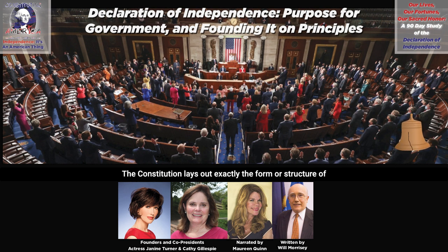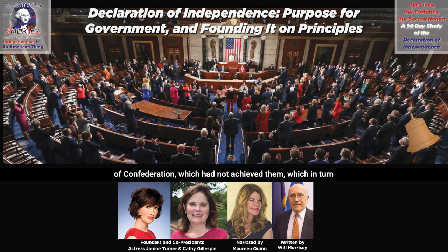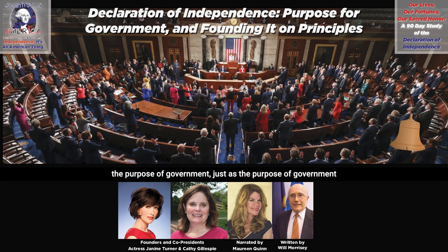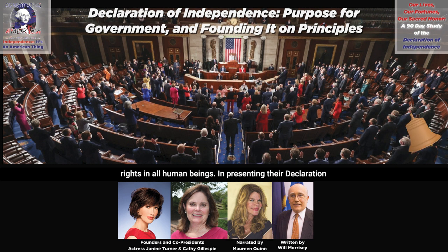The Constitution lays out exactly the form or structure of the government designed to achieve those purposes, replacing the Articles of Confederation, which had not achieved them, which in turn had replaced the regime of the British Empire, which had violated them. Thus, the right of revolution follows logically from the purpose of government, just as the purpose of government follows logically from the existence of unalienable natural rights in all human beings.